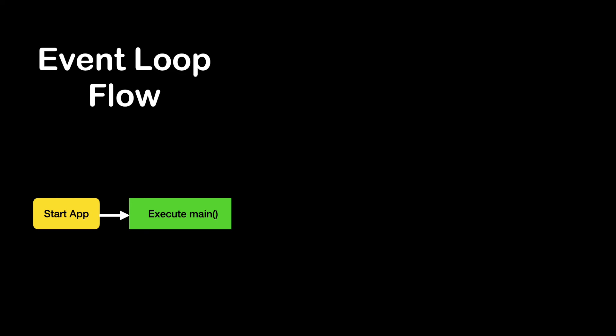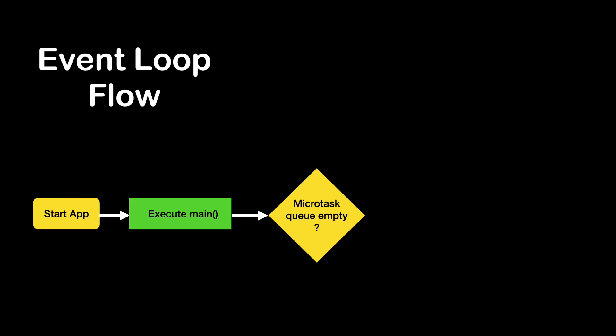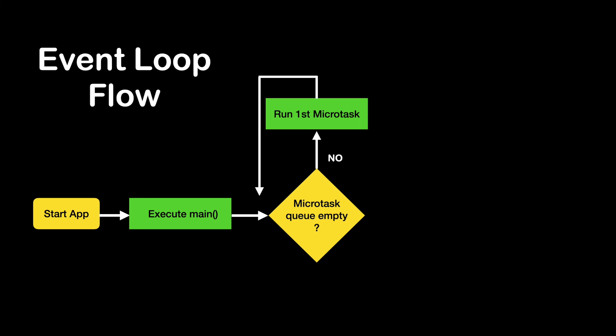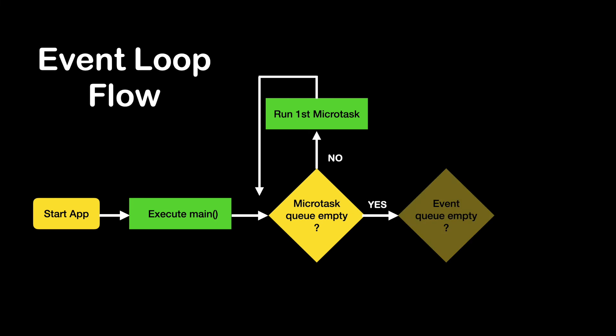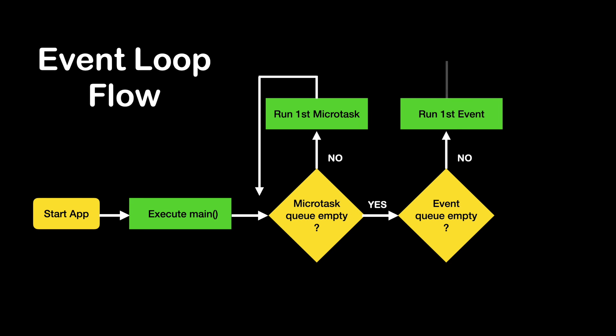Now I will show you the working flow of event loop. When we start the app, the main function will be executed first. Then the event loop starts its work. The event loop has two queues: the micro-task queue and the event queue. It first checks the micro-task queue if it is empty or not. If it's not empty, it will execute any micro-task in first-in-first-out order. Once the micro-task queue is empty, it will switch to the event queue, check if any items exist, and execute them also in first-in-first-out order. The event loop will then repeat the cycle — execute all micro-tasks and then handle the next item on the event queue — until both queues are empty and no more events are expected.